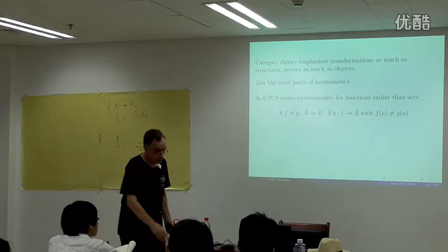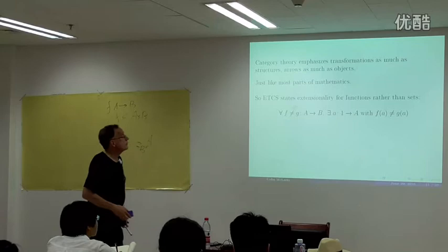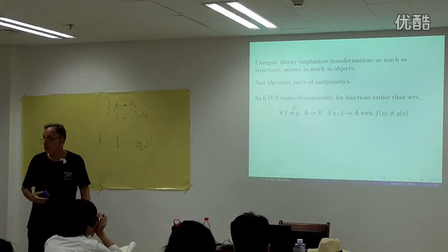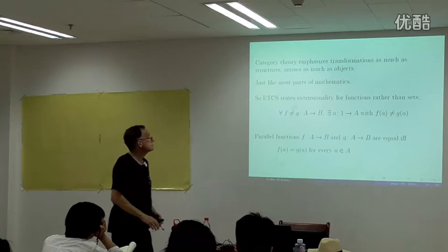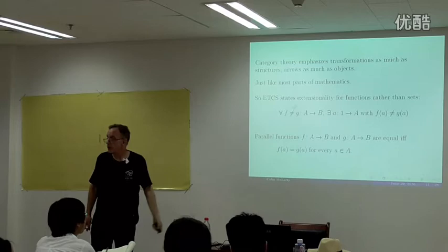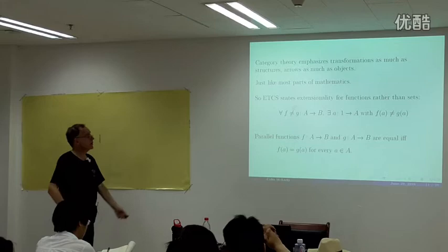The elements determine the set they're elements of, but this is non-trivial — nothing like this holds in most categories even if they have a terminal object, and it does not happen in most toposes. In other words: parallel functions are equal if they agree on every value in A. This is a contrapositive statement of the extensionality axiom.